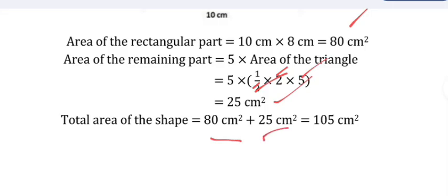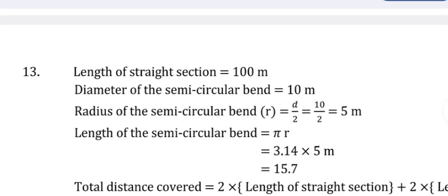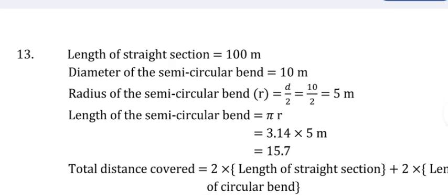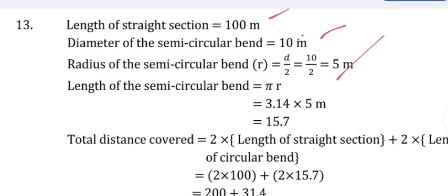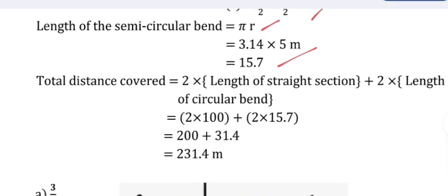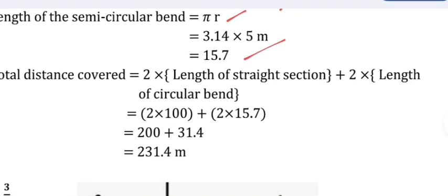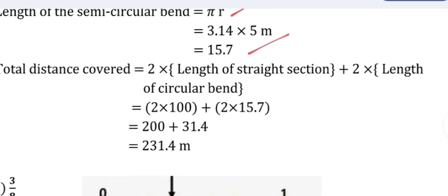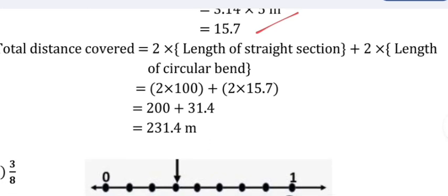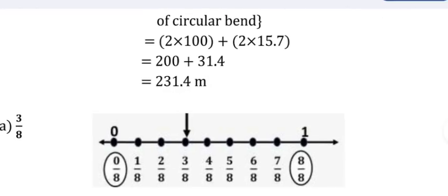Question 14 solution: Length of straight section = 100 meters. Diameter of semicircular bend = 10 meters, so radius = 5 meters. Length of one semicircular bend = π × r = 3.14 × 5 = 15.7 meters. Total distance = 2 × straight section + 2 × semicircular bend = 2 × 100 + 2 × 15.7 = 200 + 31.4 = 231.4 meters.